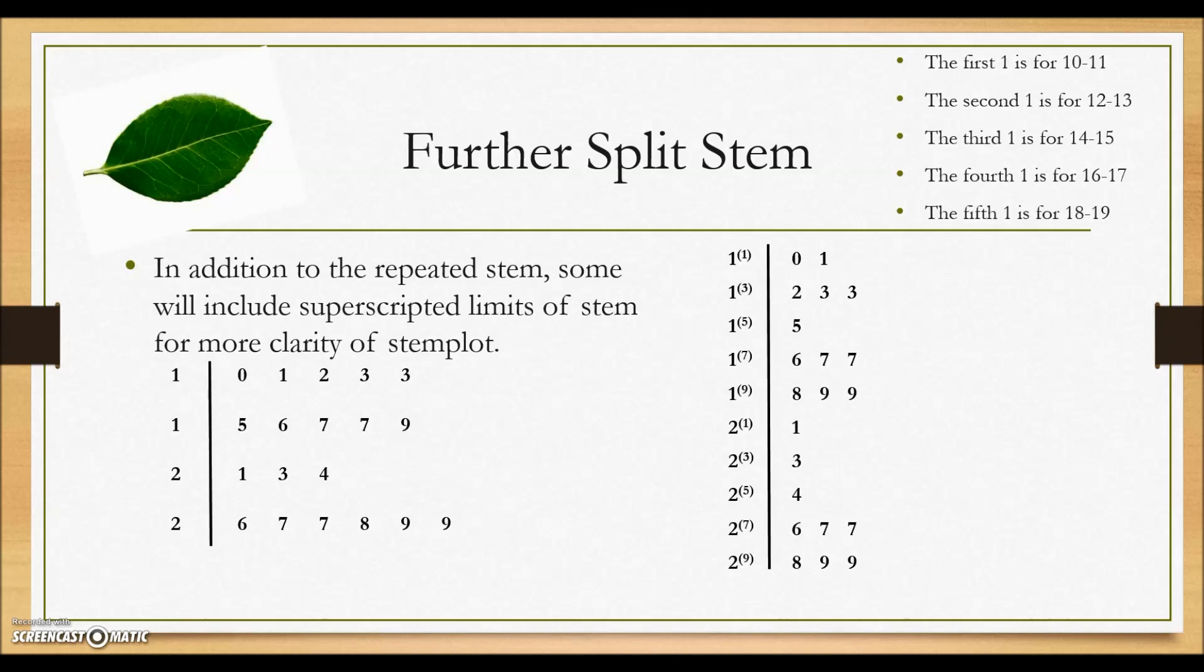In addition to the repeated stem, some graph makers will include a superscripted limit on the stem for more clarity of their stem plot. Here showing the further split stem with the superscript, one is showing the higher range value for this interval. This would be the 10 to 11 interval. This would be the 12 to 13, 14 to 15, and so on.